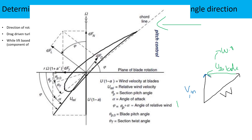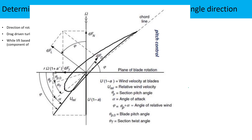Now I will explain another way to determine in which direction the turbine should be moving. Given the direction of rotation, the relative velocity W is shown. The drag will act in the direction of the relative velocity. We then have two components of drag: one along the plane of blade rotation (x-direction) and one along the y-axis, which is the direction of the incoming wind. So we have drag in the x-direction and drag in the y-direction.